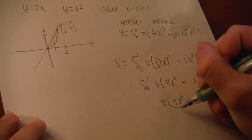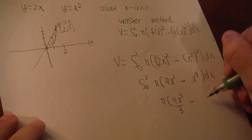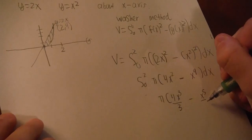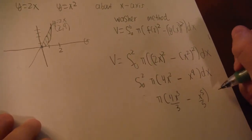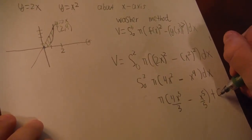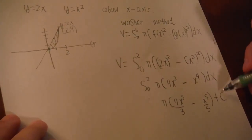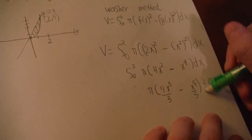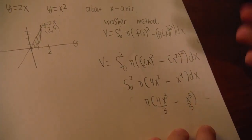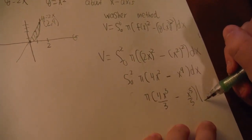Now we're just simplifying. Solving the integral, we're going to do pi times 4x to the 3rd divided by 3 minus x to the 5th over 5 plus our c.